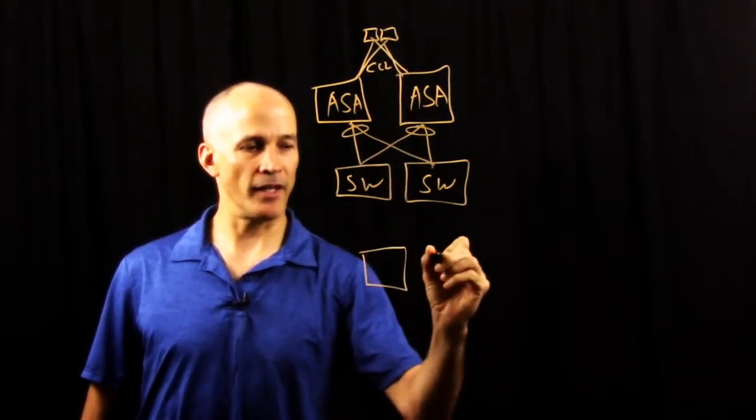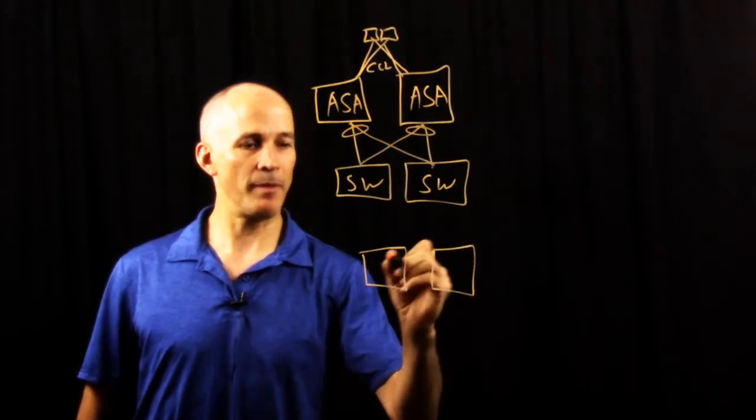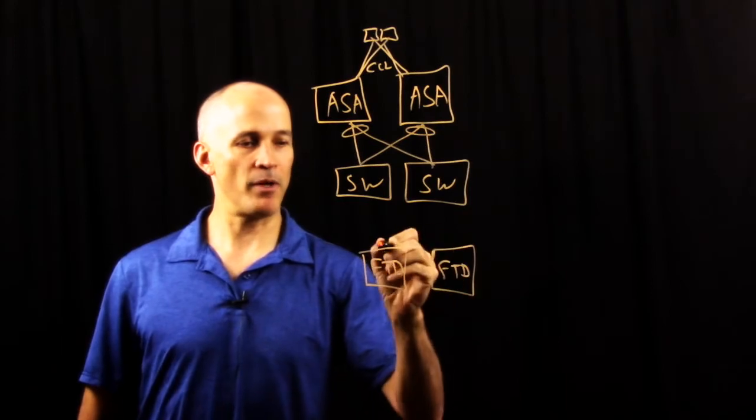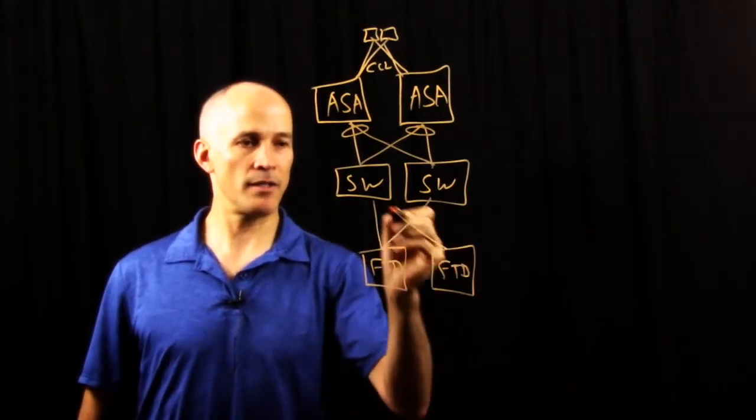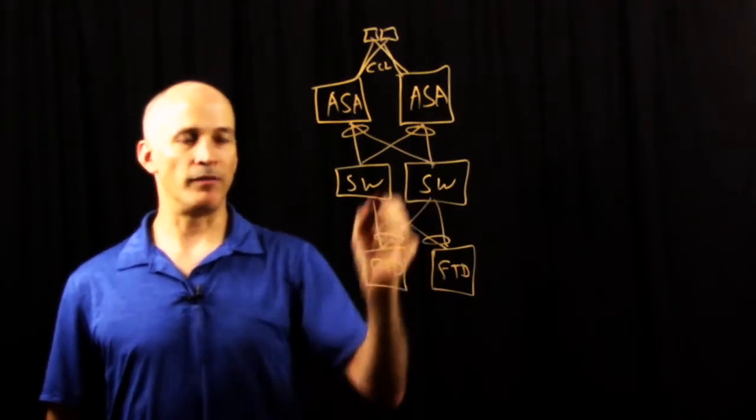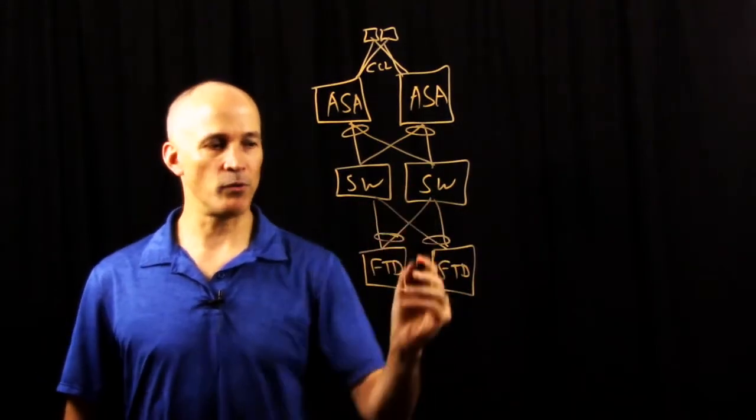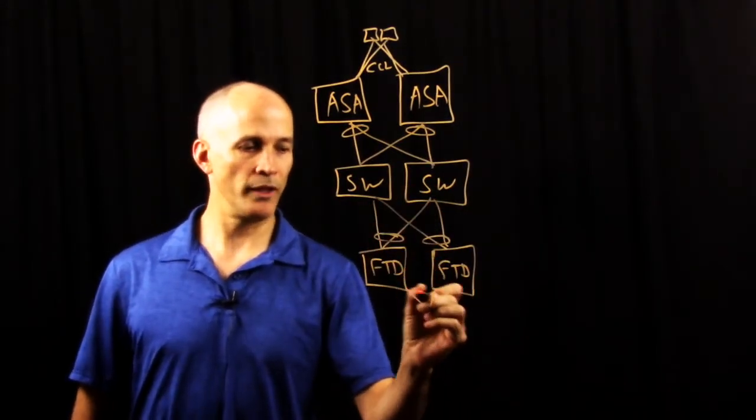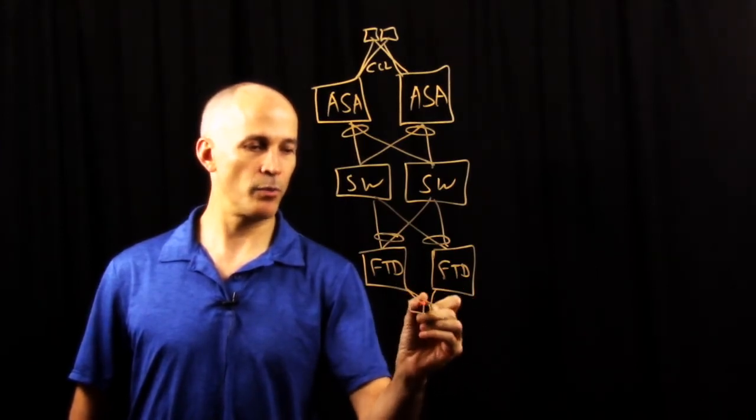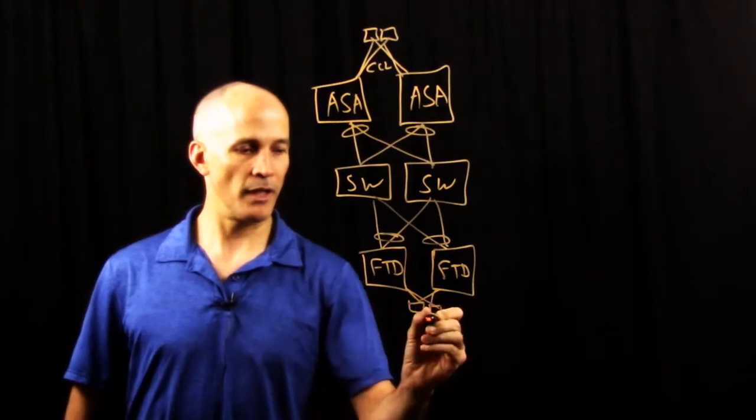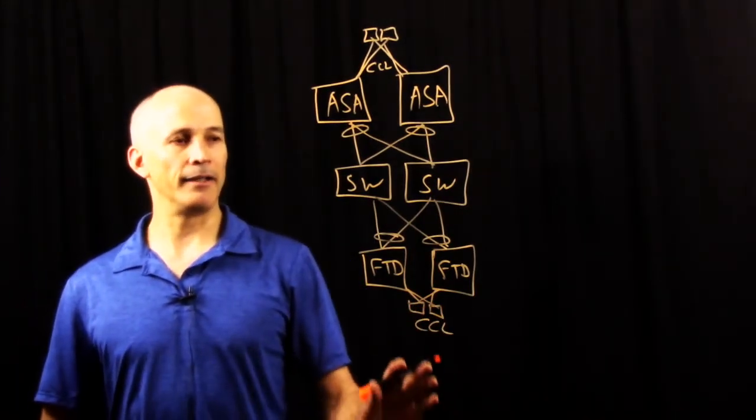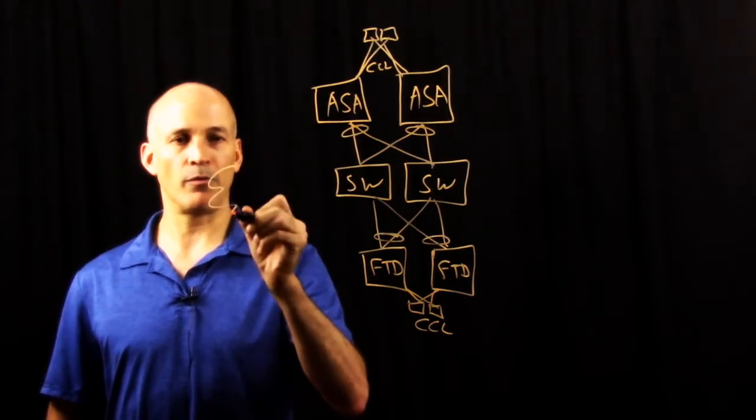In the scalable design, we have another cluster right behind it that's comprised of FTD, Firepower Threat Defense. Firepower Threat Defense is connected in just like the ASA cluster. A pair of virtual port channels going to the switches, cluster control links coming off to another pair of switches over here to allow all of our CCL data to flow and packet flow through this design.